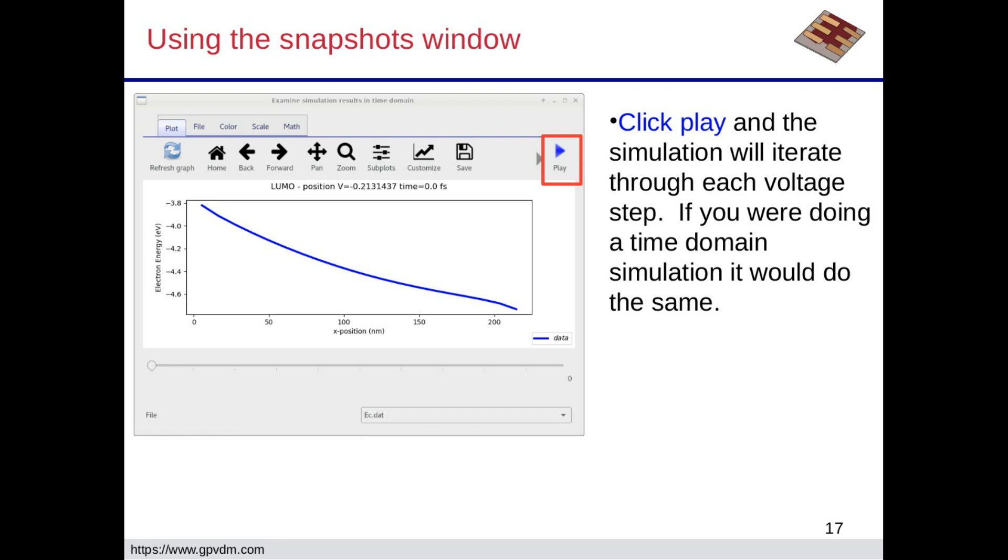And so this would work for time domain too. So if you're doing a time domain simulation, you'd look at what's happening with the electron population as stuff's going on. Have you done that? It might be worth clicking pause before you close the window because otherwise it might just keep going. That's a bit of a bug that I've not fixed yet. So just pause before you close that window.